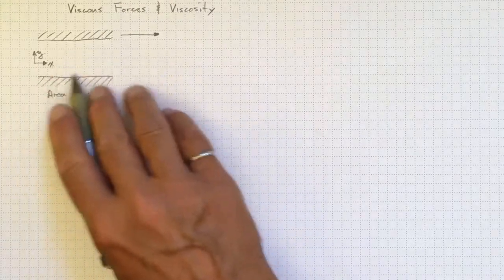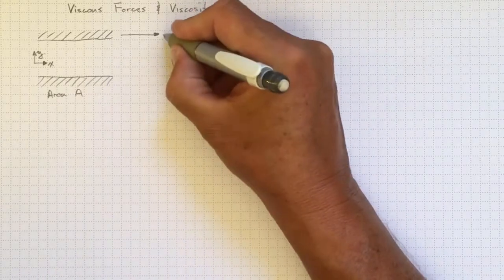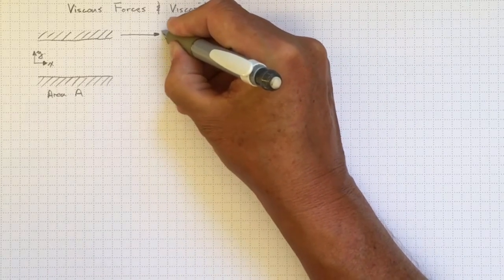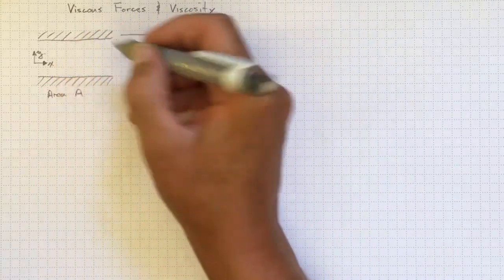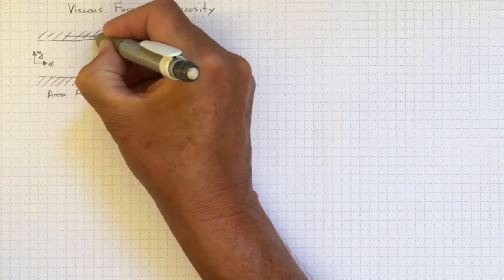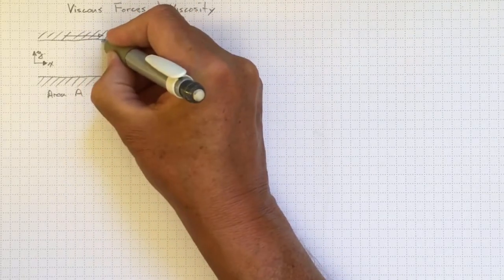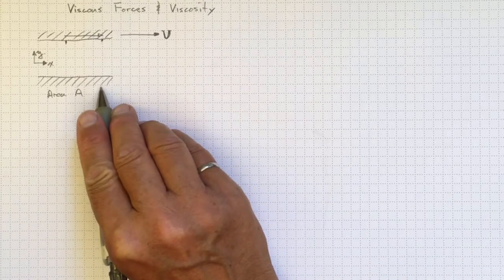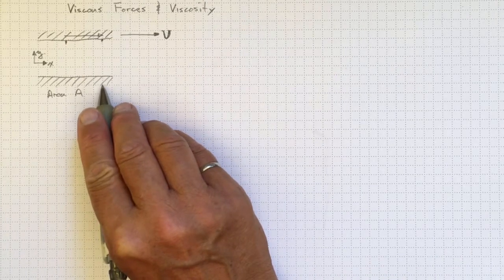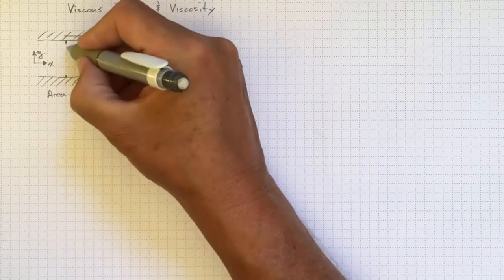Imagine for a moment that we've got a fluid in the middle here between two plates, and one of these plates is moving up here at the top at some velocity capital U, and it will pull the fluid along with it at that same velocity capital U, so that this piece of fluid right here is going that fast. Down here at the bottom plate, it's not moving, so the fluid that's right adjacent to it will have no velocity.